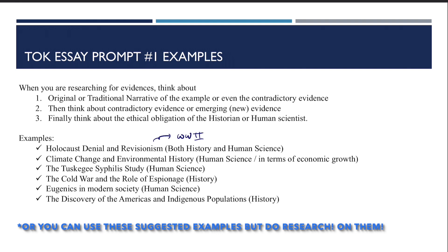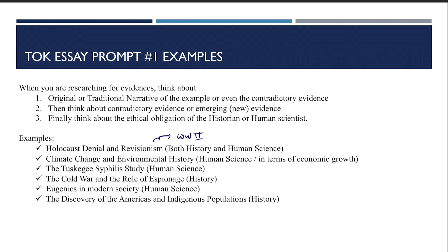Other examples include the Tuskegee Syphilis Study — human science — and the Cold War and the denial of espionage — a history example. The eugenics in modern society is also an interesting human science example, though it may require extensive research for primary sources. Finally, the discovery of the Americas and indigenous populations is a strong history example.